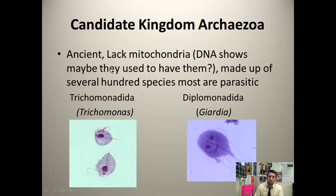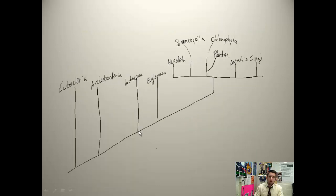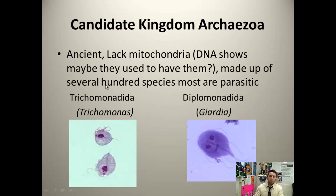Archaeozoa is thought to be the most ancient — that's why we have it branching off first on the cladogram. It lacks mitochondria. But recently, some DNA evidence — we talked about the advancements in biochemistry — has shown that perhaps it used to have mitochondria. So we're kind of starting to change our thinking of the archaeozoa; maybe their systematics isn't quite what we think it is.